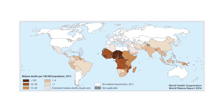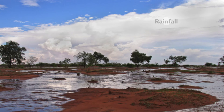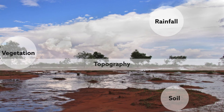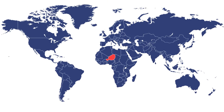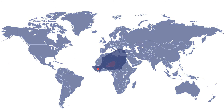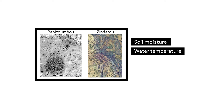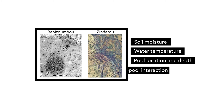In West Africa, where more people are infected with and die from the disease than anywhere else in the world, the number and size of rainwater pools depends on rainfall patterns, as well as local soil, vegetation, and topography. Scientists spent several years doing fieldwork in two villages in Niger to collect information about soil moisture, water temperature, pool location and depth, and how mosquitoes interact with these pools.